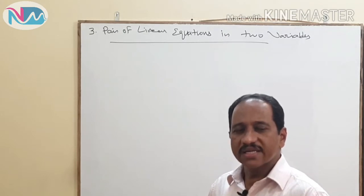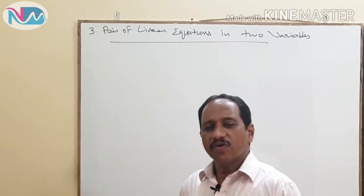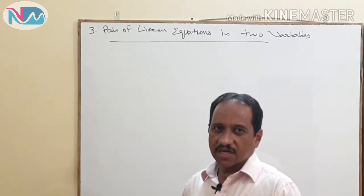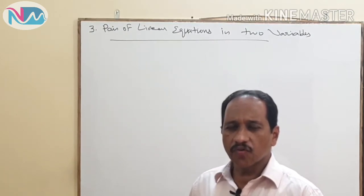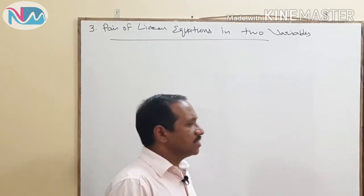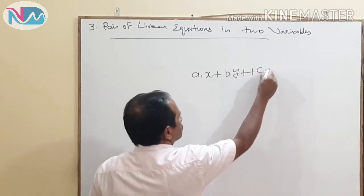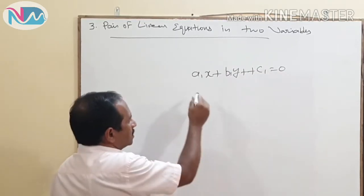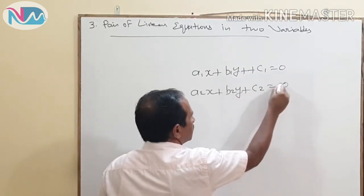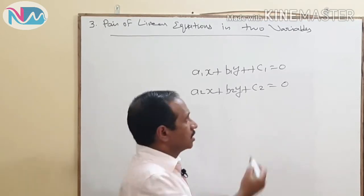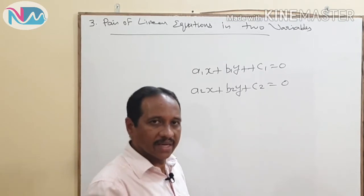For class 10, we have a pair of linear equations in two variables. We will start the lesson with the standard form of a pair of linear equations in two variables. The standard form is: a1x plus b1y plus c1 equals 0, and a2x plus b2y plus c2 equals 0, where a1, b1, c1, a2, b2, c2 are all real numbers.